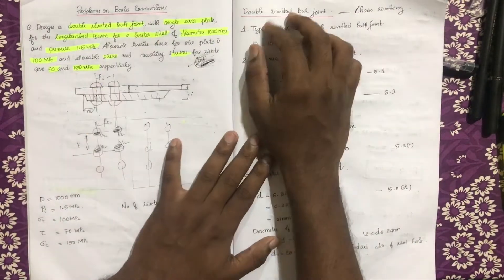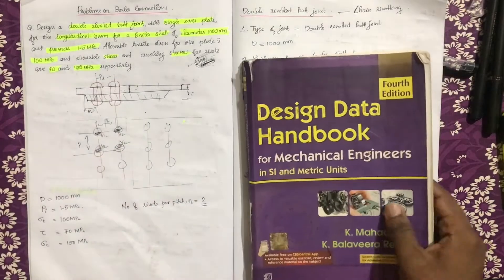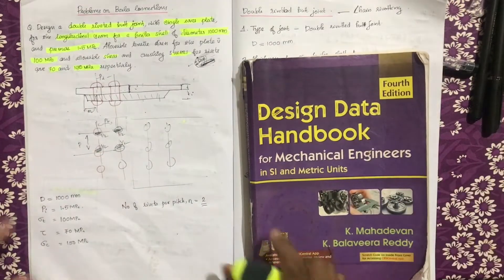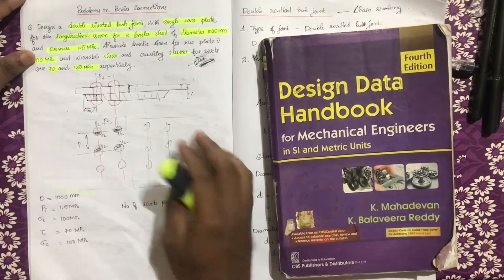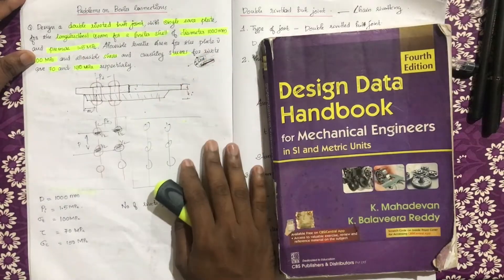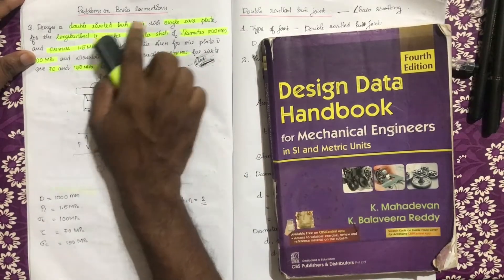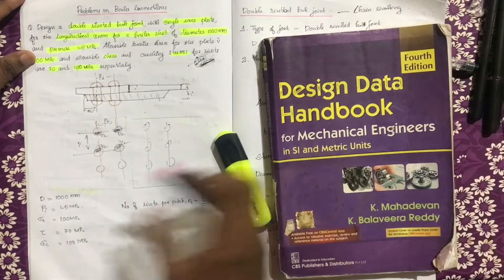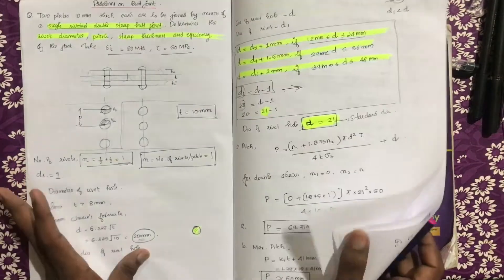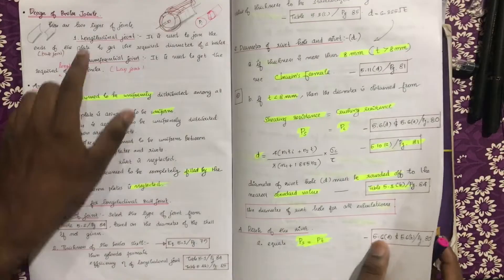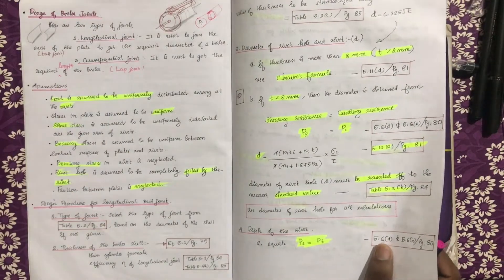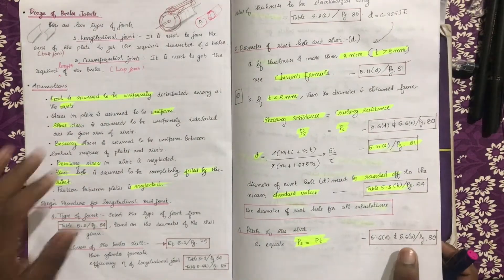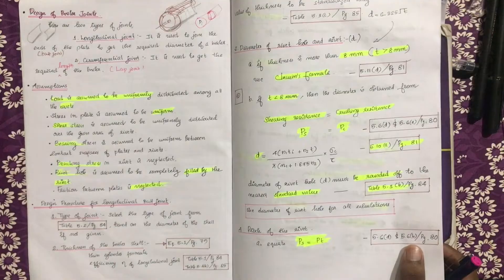If you have any problems with Boiler Connections, you will find the other part. With Boiler Connections, you will find two types of joints: a longitudinal joint and a circumferential joint.